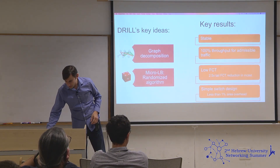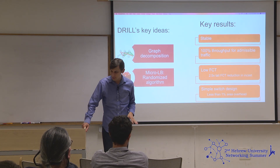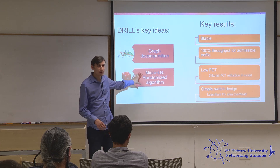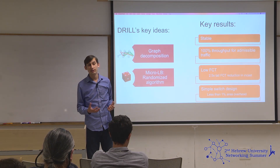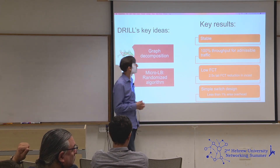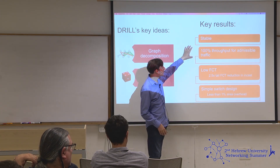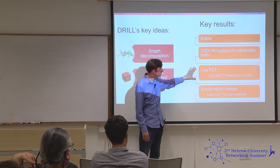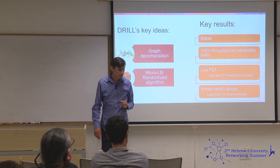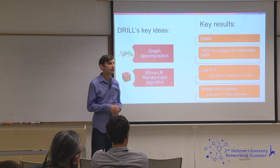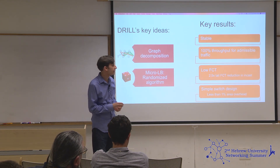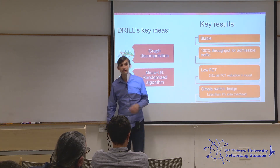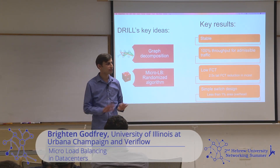The key ideas are micro load balancing — making small per-packet decisions with a randomized but load-aware algorithm — along with graph decomposition that handles asymmetry from failures. Key results include stability, provable throughput, and empirically low flow completion time, achieved with a very simple switch design that is implementable in hardware. The most interesting future questions lie around implementation specifics.